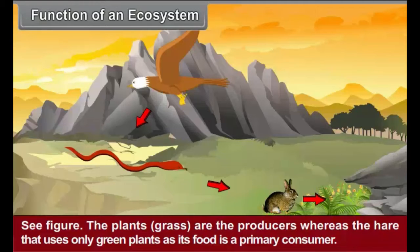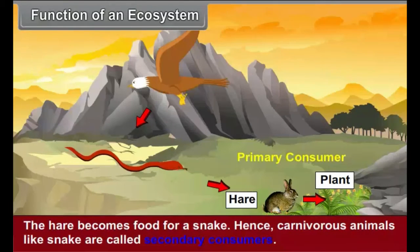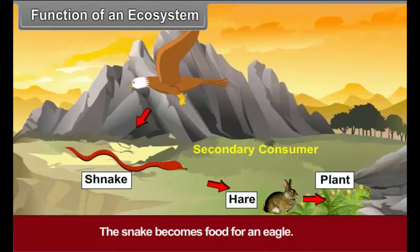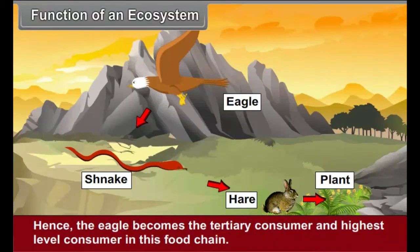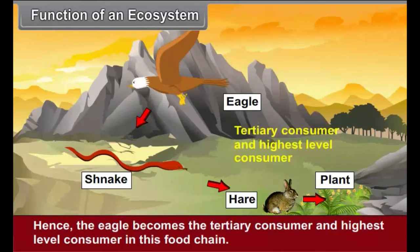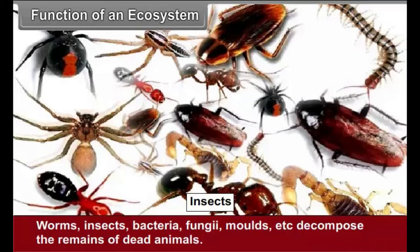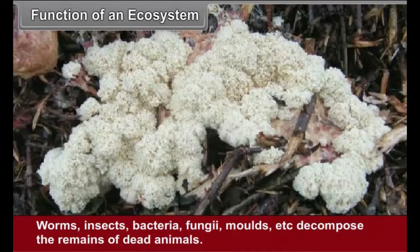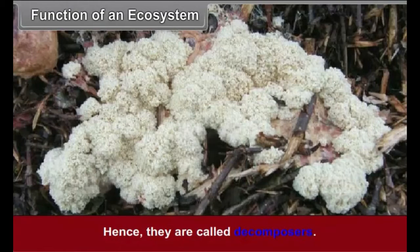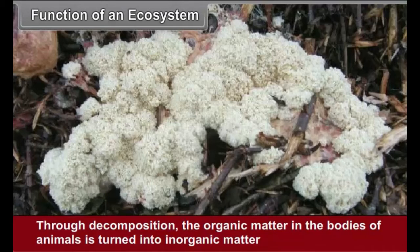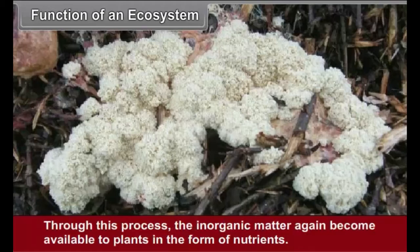For example, plants — that is, grass — are the producers. The hare, which uses only green plants as its food, is a primary consumer. The hare becomes food for a snake; hence carnivorous animals like snakes are called secondary consumers. The snakes become food for an eagle; hence the eagle becomes the tertiary consumer and the highest level consumer in this food chain. Worms, insects, bacteria, fungi, molds, etc., decompose the remains of dead animals; hence they are called decomposers. Through decomposition, the organic matter in the bodies of animals is turned into inorganic matter which gets mixed in the soil, and this inorganic matter again becomes available to plants in the form of nutrients.